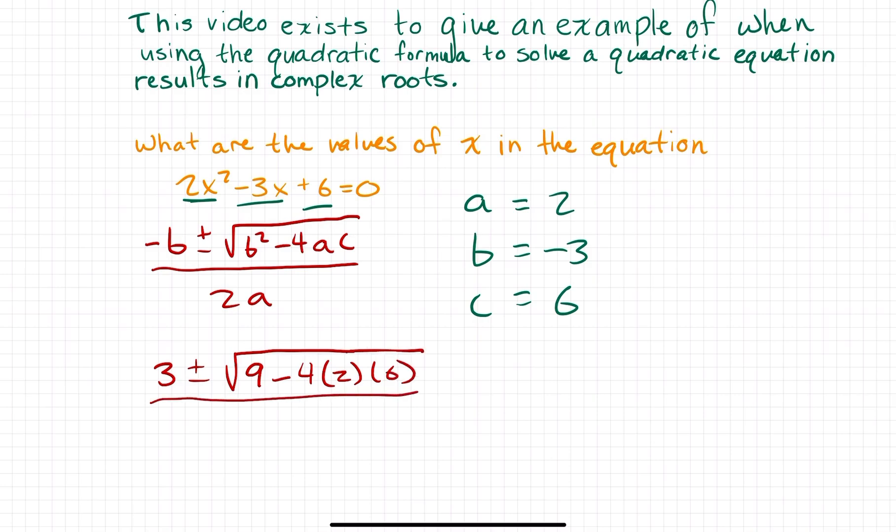All right. And then all of that's going to be divided by 2a. In other words, 2 times 2. So, I'm just going to go ahead and write a 4 underneath here. All right. In my next step, I'm going to simplify a little bit of what's going on underneath the radical. So, I'll write 3 plus or minus the square root of 9 minus. What's going on here? 4 times 2 times 6. So, 4 times 2 is 8. 8 times 6 is 48.